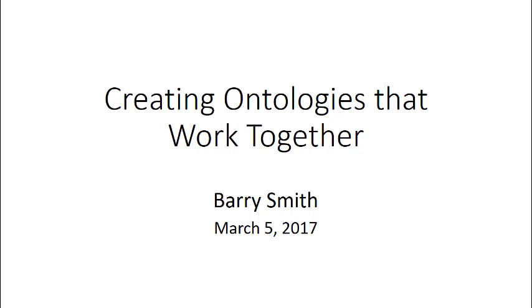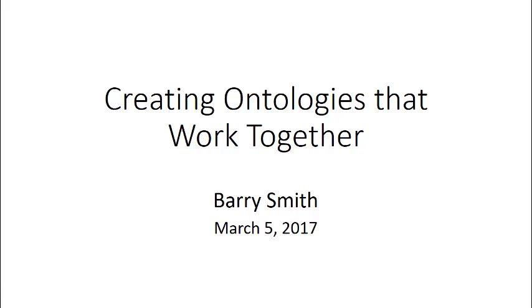Level two is what goes on inside your head, or inside a scientist's head, or inside a bird's head when the bird perceives a tree. So level two is the interior part of everything. It is a proper part of level one because what goes on inside your head truly does exist. But it has a special status, turning on the fact that it includes ideas, thoughts, beliefs and perceptions in people's heads, which give us access to targets of mental experience.